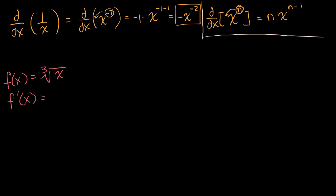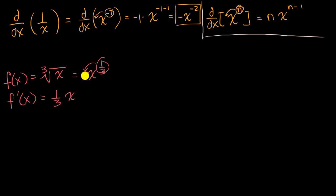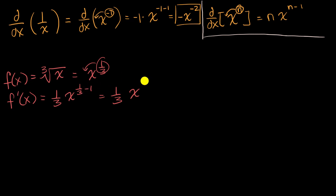The idea is to rewrite this as an exponent: the cube root of x is x to the 1/3 power. So the derivative — you take the 1/3, bring it out front — it's 1/3 times x to the 1/3 minus one power, which is 1/3 times x to the negative 2/3 power. And we are done.